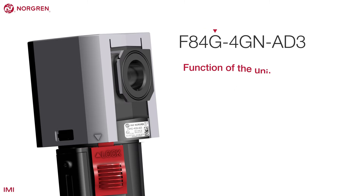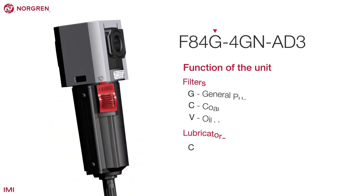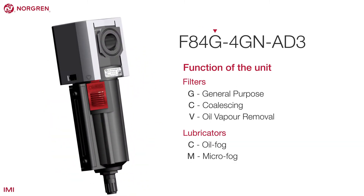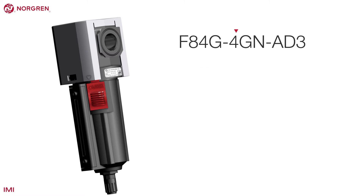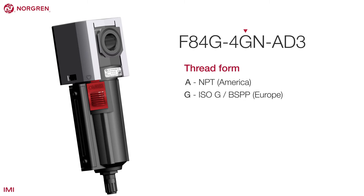The fourth digit gives more detail on the function of the unit. In our example, G represents general purpose. The fifth digit represents the port size, which is also measured in eighths of an inch — in our example, this is 4. The sixth digit tells us the thread form; G represents ISO G thread.